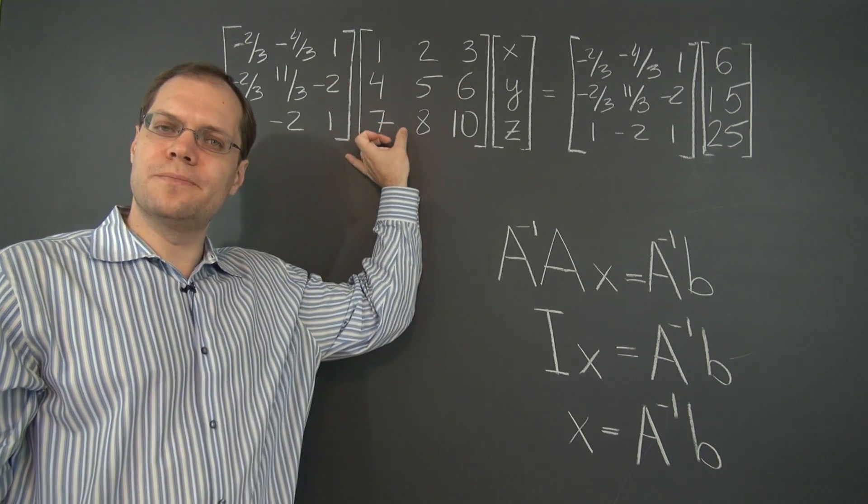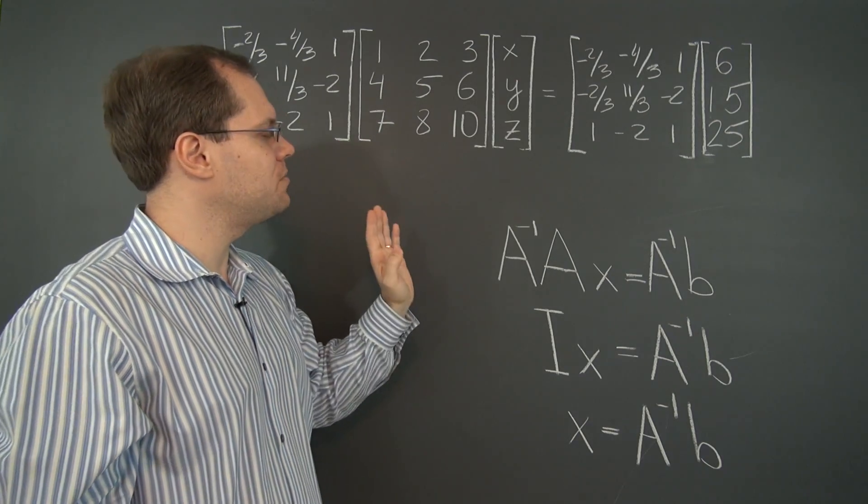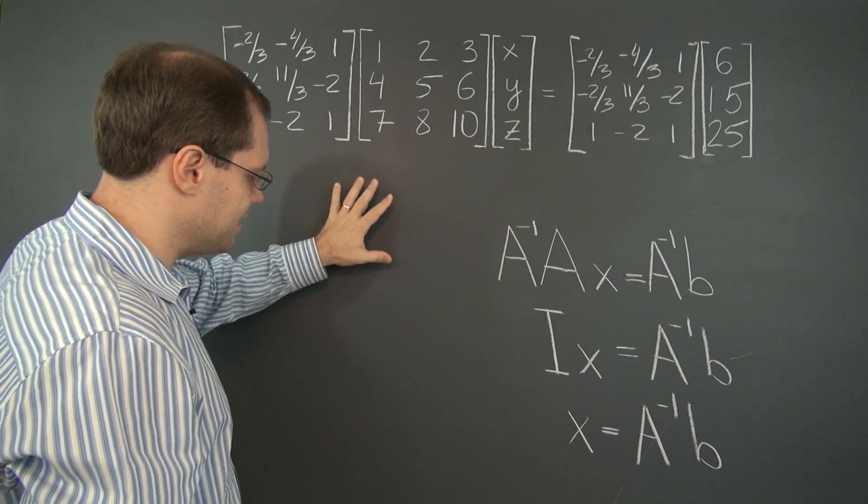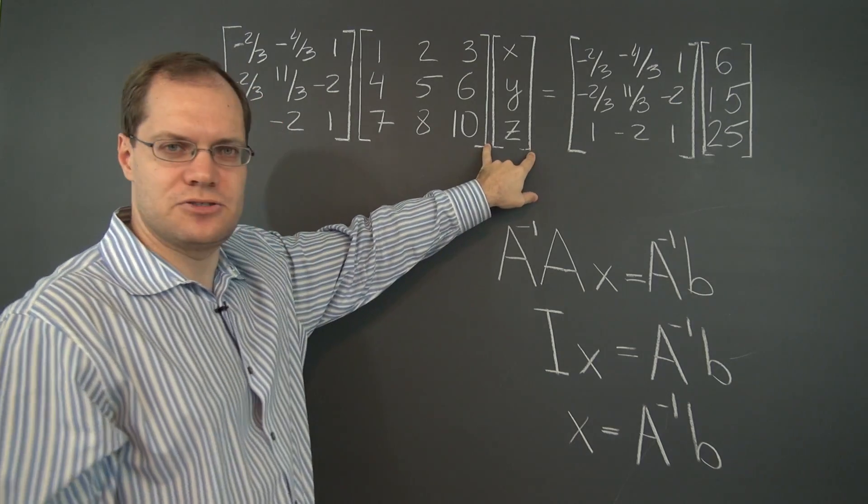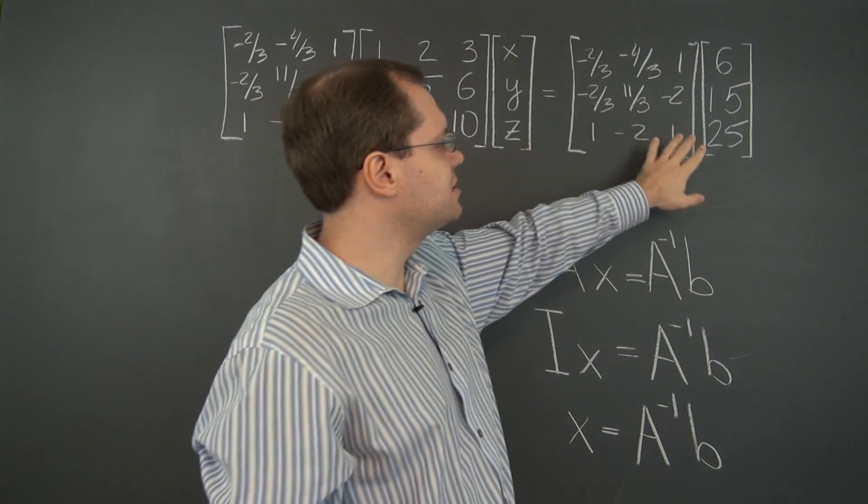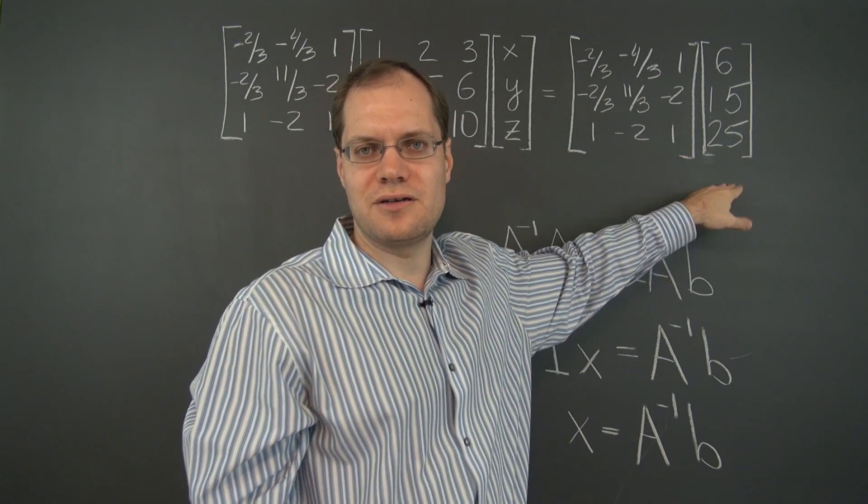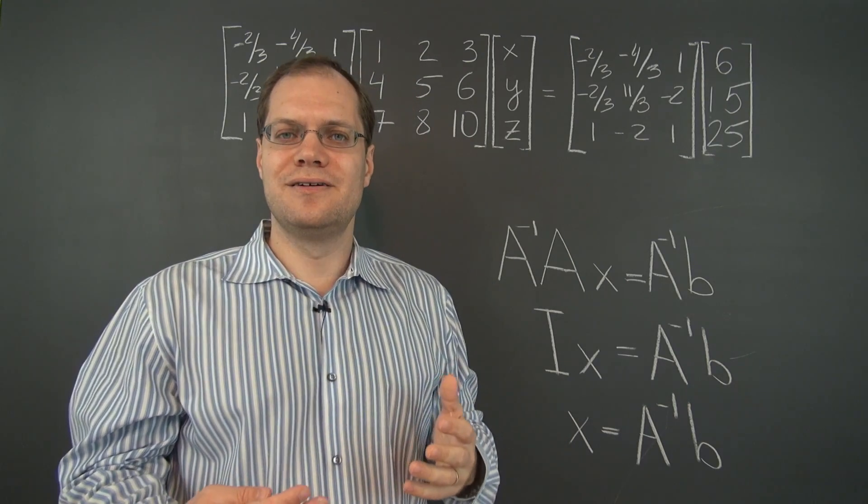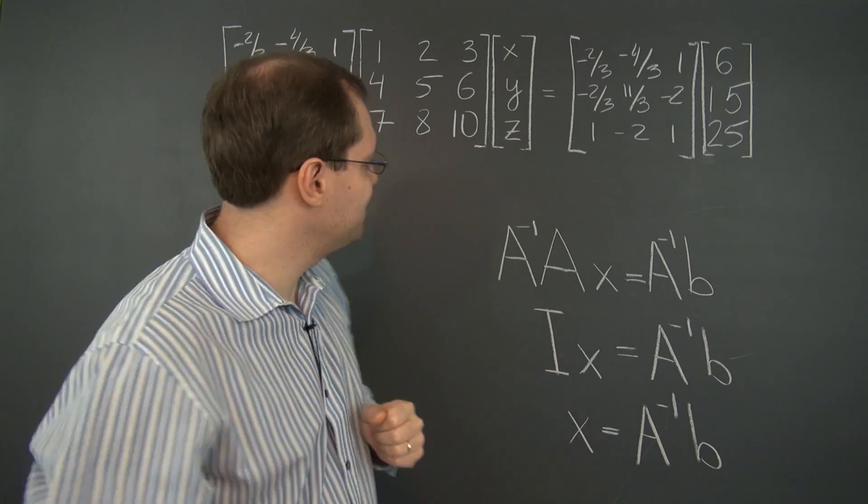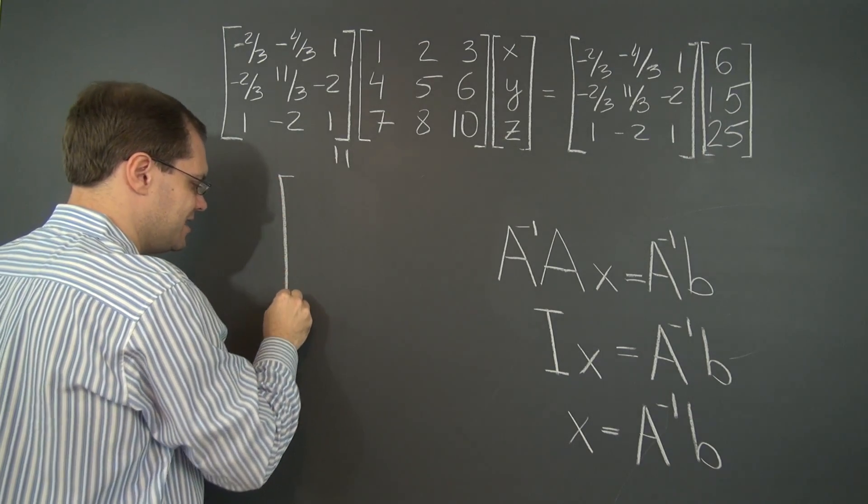Number one, to make sure that this product is indeed identity. And number two, once we make sure of that, which means that on the left-hand side we have identity times this matrix. In other words, just that matrix alone equals this product. So when we evaluate this matrix product, we'll have our solution. That's the beauty and the power of the inverse.